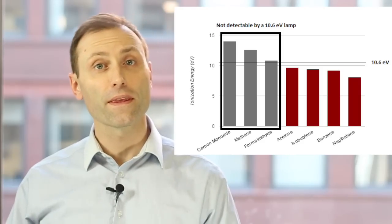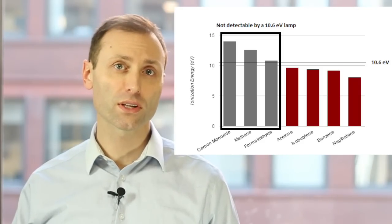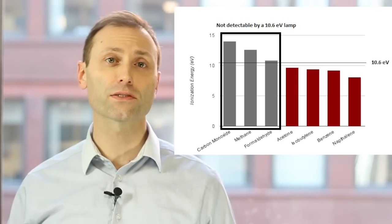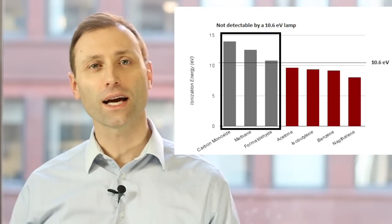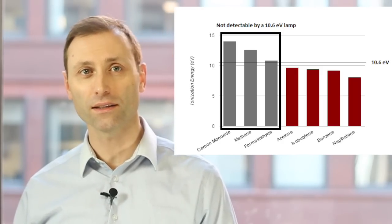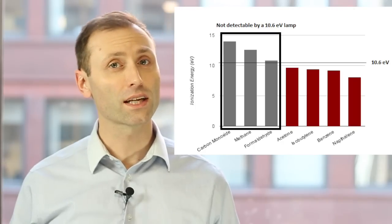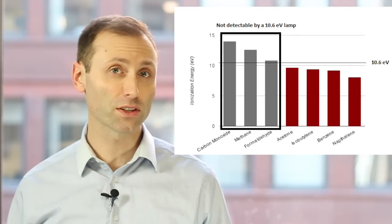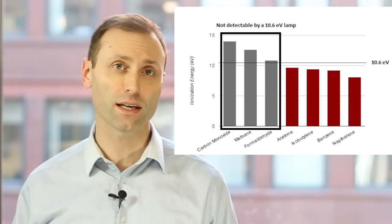For example, if the PID has a 10.6 electron volt lamp, it won't have enough energy to ionize formaldehyde, which has an ionization energy of 10.9. Put another way, a 10.6 electron volt lamp will be blind to formaldehyde, not to mention methane and carbon monoxide.